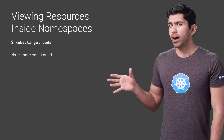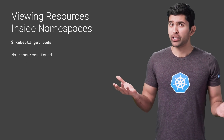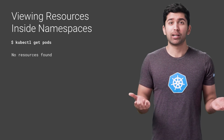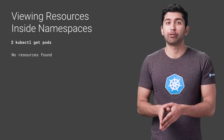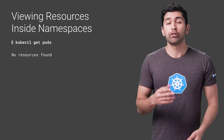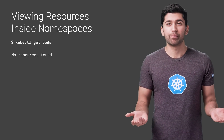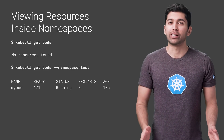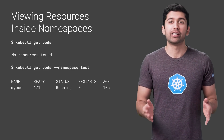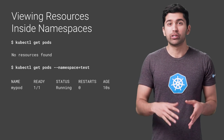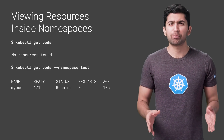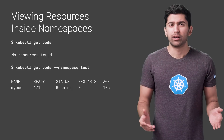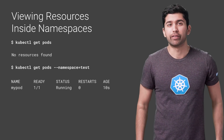Now if you try to find your pod, you might notice you can't find it. This is because all commands are run against the current active namespace. To find your pod, you need to use the namespace flag. This can get annoying quickly, especially if you're a developer working on a team that uses its own namespace for everything and doesn't want to use the namespace flag for every single command. Let's see how we can fix that.